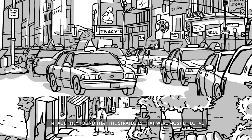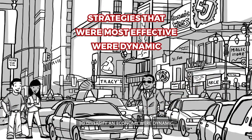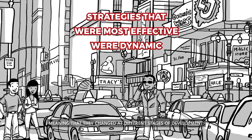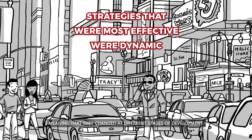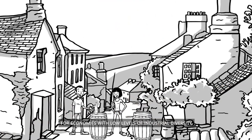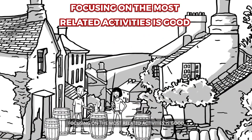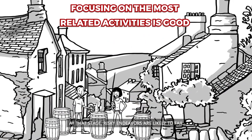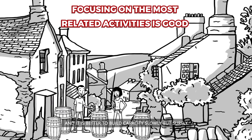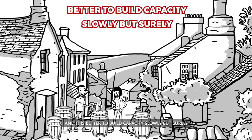In fact, they found that the strategies that were most effective to diversify an economy were dynamic, meaning that they changed at different stages of development. For economies with low levels of industrial diversity, focusing on the most related activities is good. At that stage, risky endeavors are likely to fail, and it is better to build capacity slowly but surely.